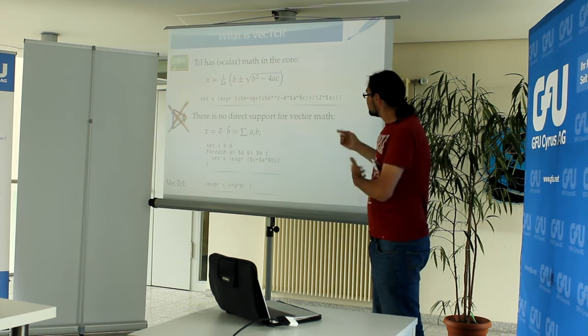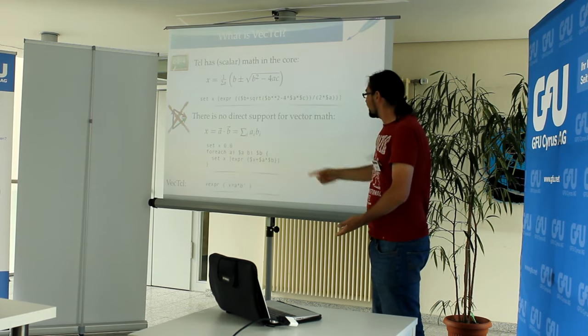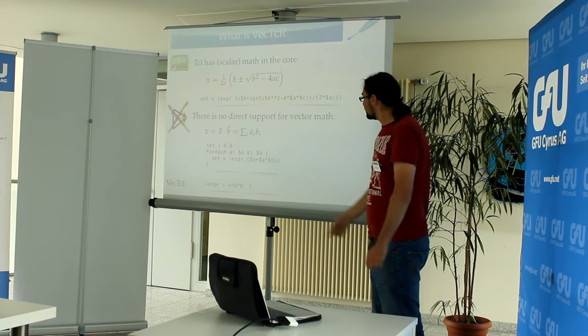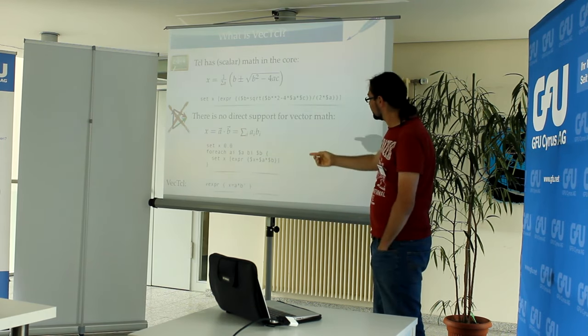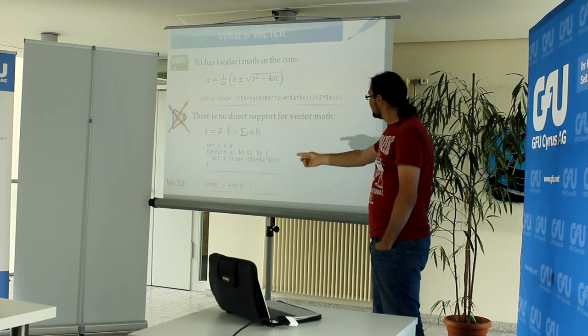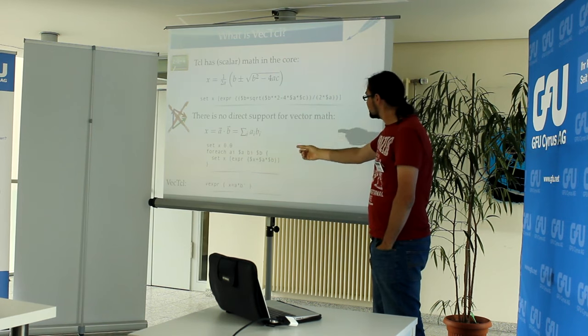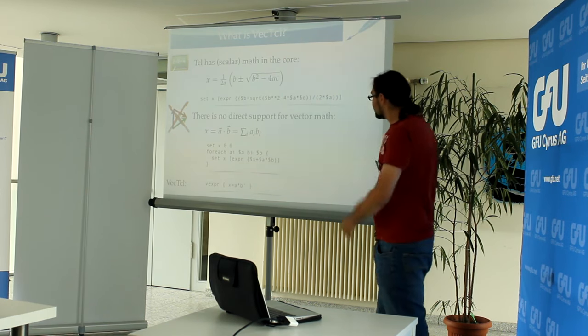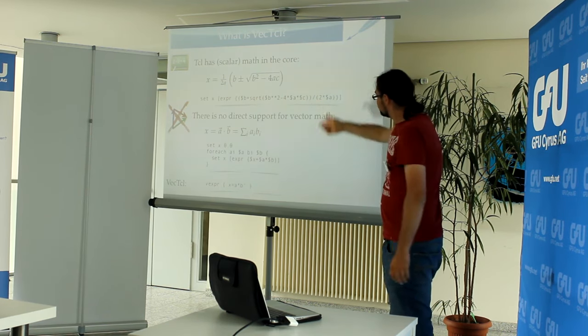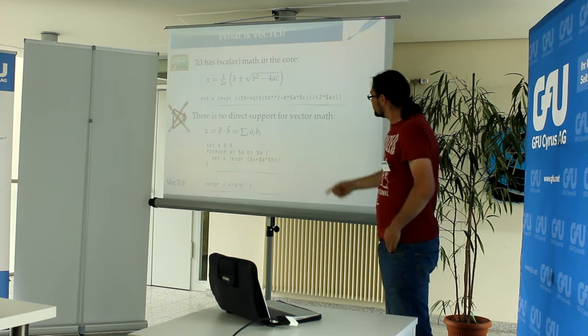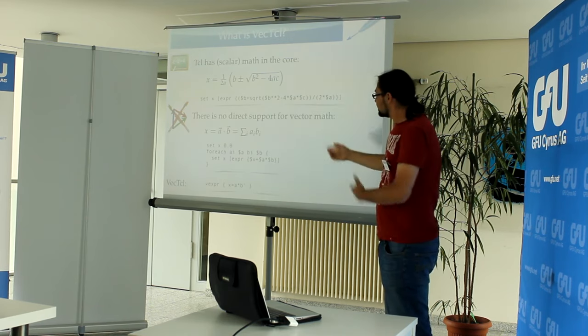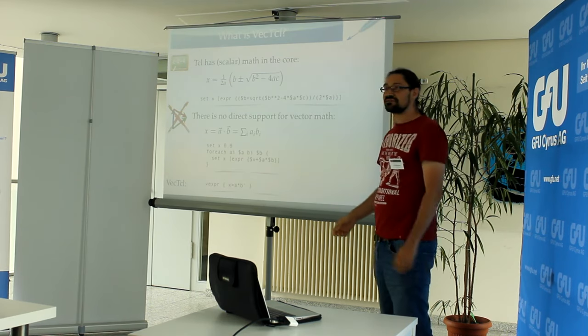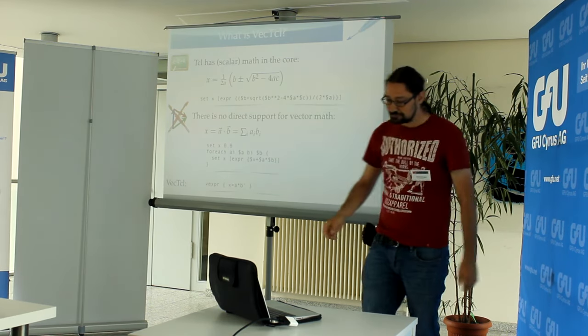But if you use Vecticl, you can just use the language from the textbook: x equals A times B transposed. This is an alternative representation of the dot product and it looks very similar to textbook math.